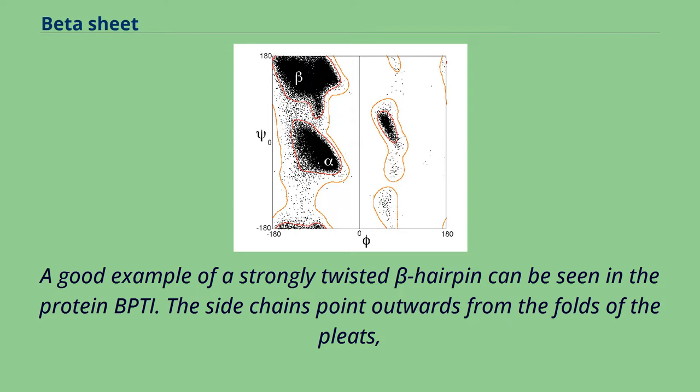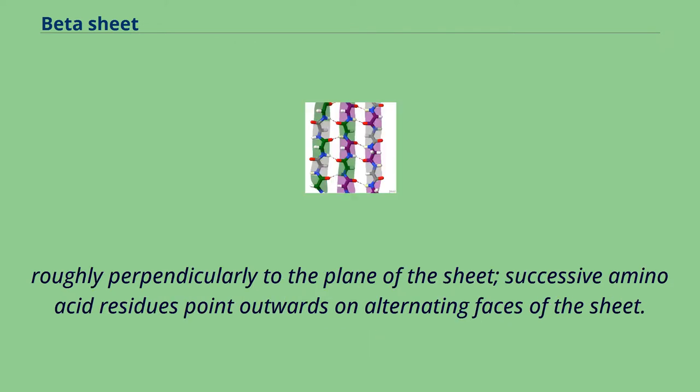The side chains point outwards from the folds of the pleats, roughly perpendicularly to the plane of the sheet. Successive amino acid residues point outwards on alternating faces of the sheet.